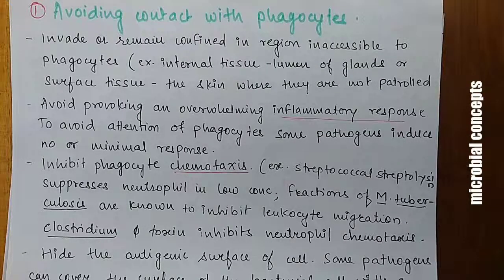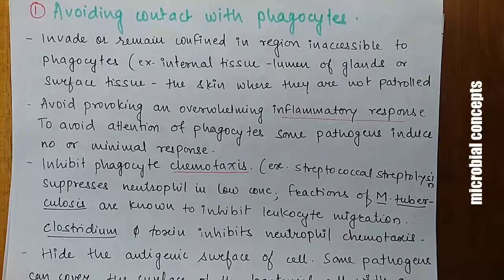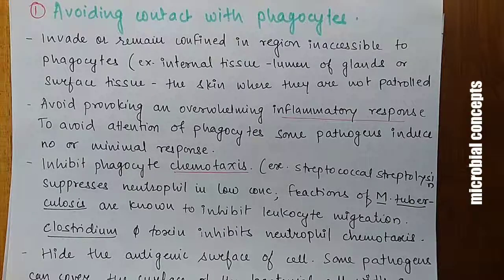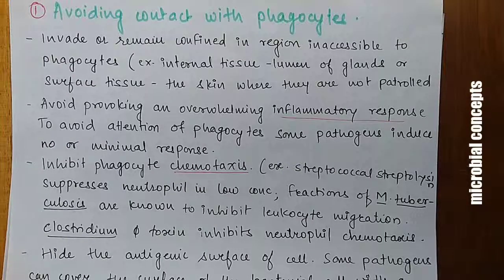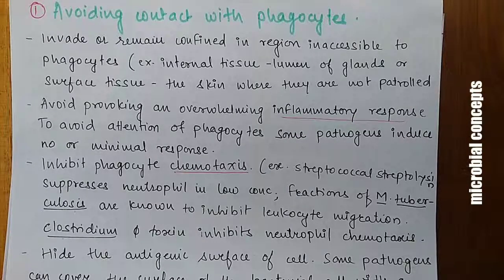Another strategy is inhibiting phagocyte chemotaxis — the movement of phagocytes in response to concentration gradients of a substance. Release of substances by certain pathogens can inhibit this movement. For example, streptococcal streptolysin suppresses neutrophils even at low concentrations. Fractions of Mycobacterium tuberculosis are known to inhibit leukocyte migration, and Clostridium species are also known to inhibit neutrophil chemotaxis.